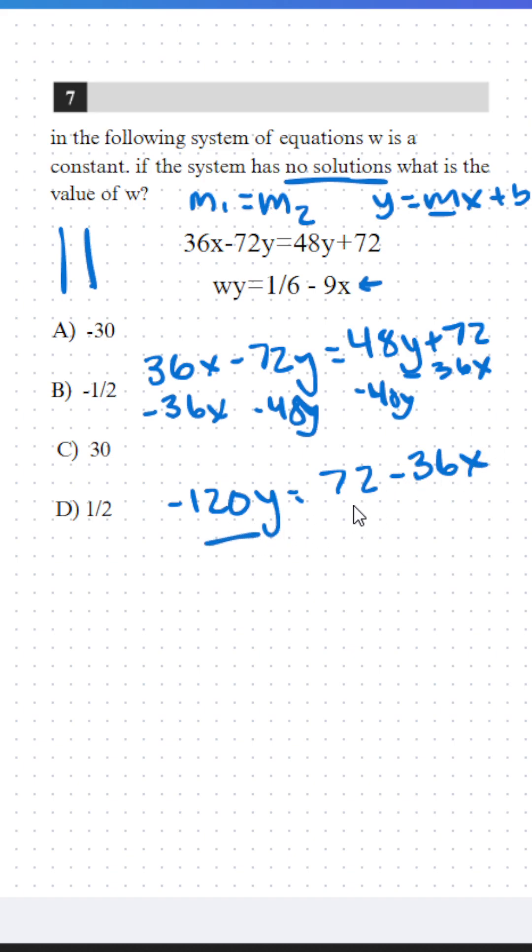We can further simplify this by dividing each side by 4, giving us negative 30y is equal to 18 minus 9x.